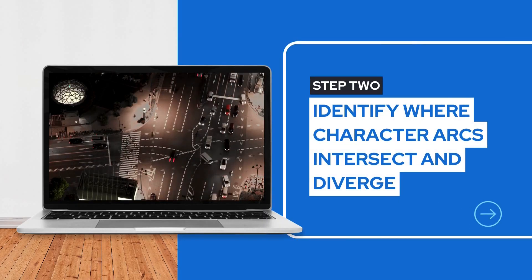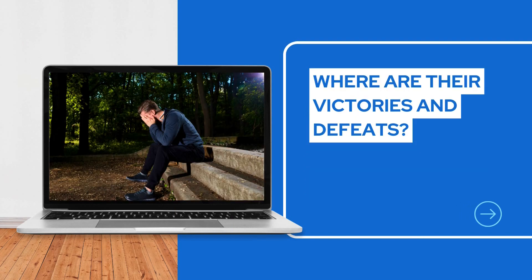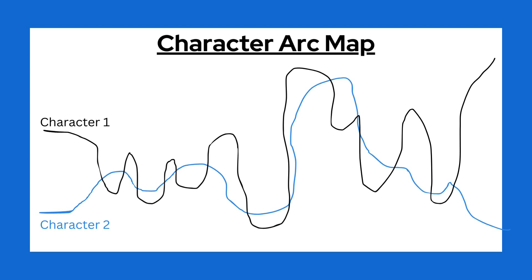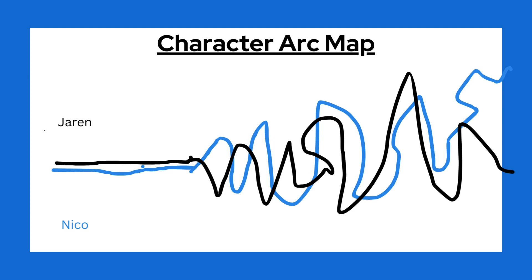Step 2: Identify where character arcs intersect and diverge. Ask yourself, where are their victories and defeats? Where do they depart and reunite? Draw lines to map out where each character has their peaks and troughs. If those lines are flat and parallel, you haven't done your job. Here's how I sketched Jaren and Niko's arcs. They start out on top of each other, which makes sense, as the first 30 or 40 pages mostly consists of graphic depictions of hardcore penetration. But things get more complicated once Niko meets John, a middle-aged writer who shows her the beauty of prose and poetry.